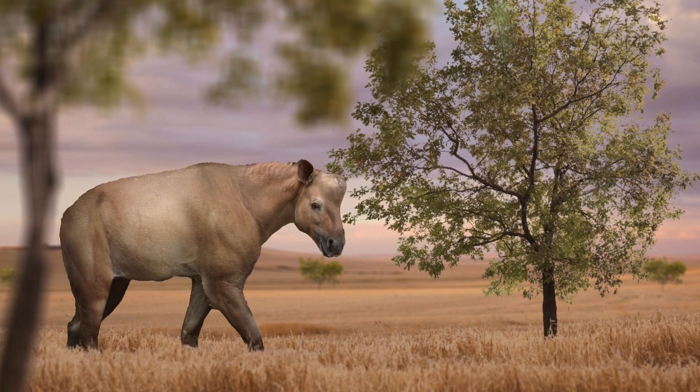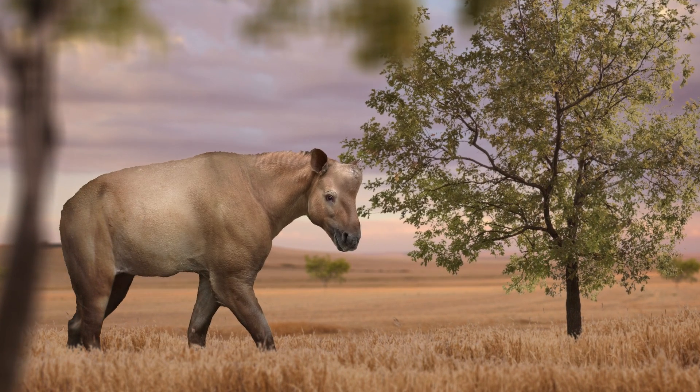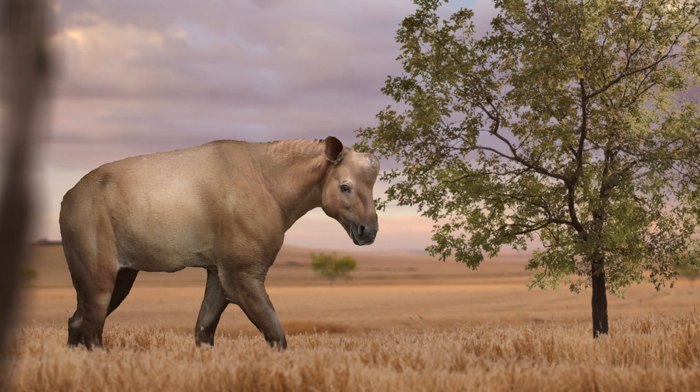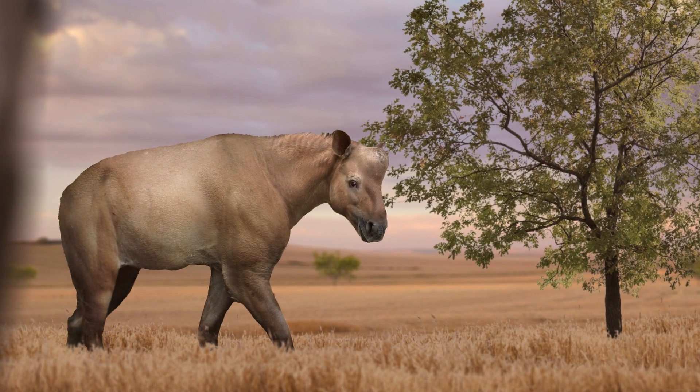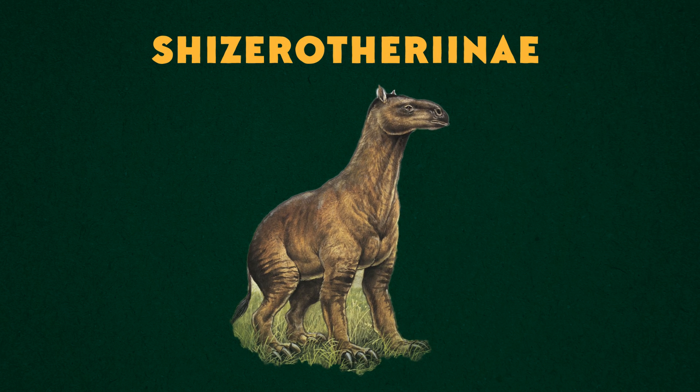And in many members of this group, domes also appeared on their heads. No one's exactly sure what purpose they served, but the prevailing theories are that the animals use them for head-butting and display to potential mates, as you do. And this group of long-necked, dome-headed Chalicotheres came to be known by the ungainly name of Schizotheriinae. But just like the other subfamily, they were still Chalicotheres.